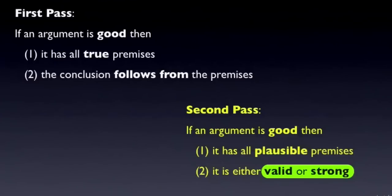We use valid and strong to help specify precisely what we mean when we say that the conclusion follows from the premises. A valid argument is one where the conclusion follows with absolute certainty from the premises, where the truth of the premises logically necessitates the truth of the conclusion.